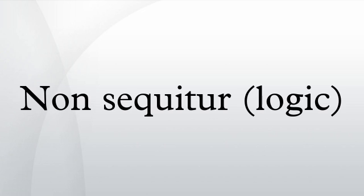Affirming a disjunct: Affirming a disjunct is a fallacy when in the following form — A is true or B is true. B is true. Therefore, A is not true. The conclusion does not follow from the premises, as it could be the case that A and B are both true. This fallacy stems from the stated definition of "or" in propositional logic to be inclusive.